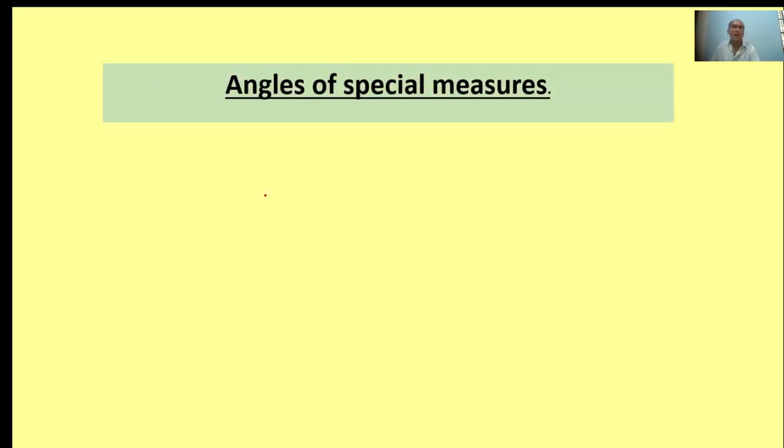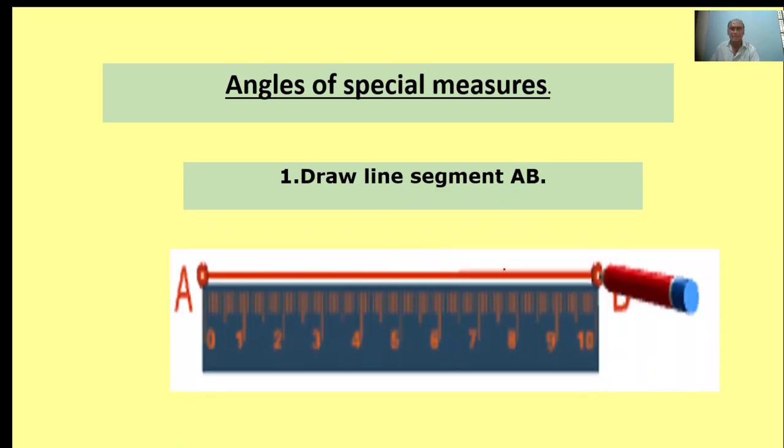Angles of special measures. So angles of special measures are there: 120 degrees, 90 degrees, 60 degrees, and 30 degrees called special measures. First, draw a line segment AB. Line segment AB, draw a line.